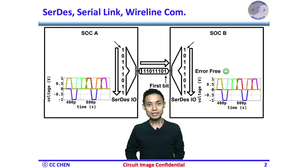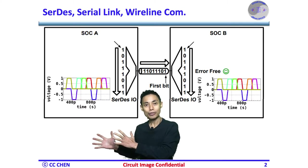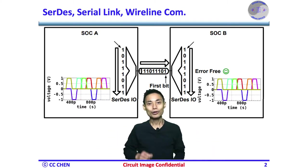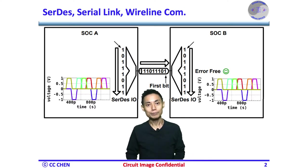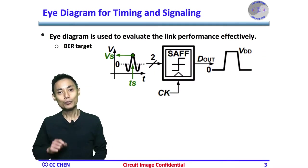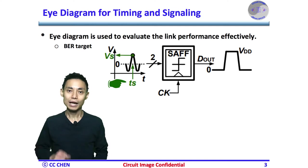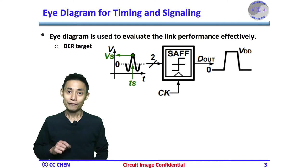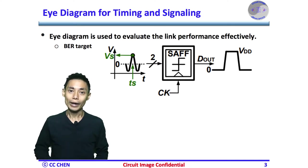As we discussed, in data transmission, we need to move the data from SOC-A through a cable or channel to SOC-B. The goal of data transmission is to achieve a low BER at the receiver side. Therefore, the sampling timing is critical. For link quality and margin estimation, we care about the sampler's sampling time TS and sample voltage VS, since both will affect the quantizer's decision — whether wrong or right — which affects the BER target.